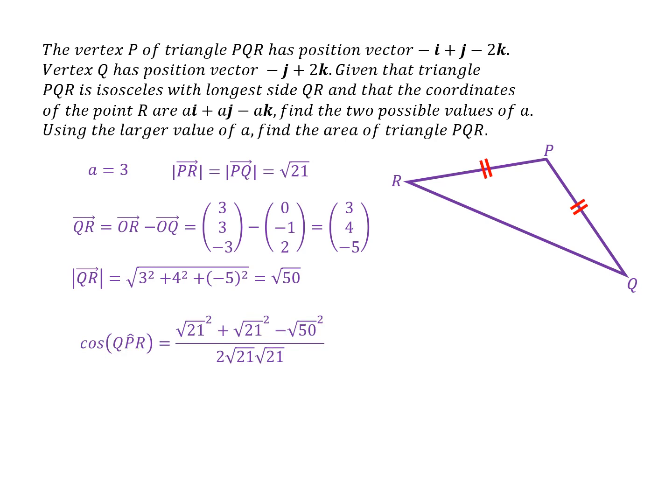So now using the cosine rule on this triangle, I can work out the obtuse angle. And work out this angle here, QPR. And that's 100.98 degrees.